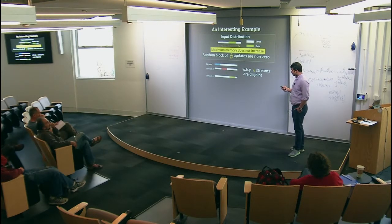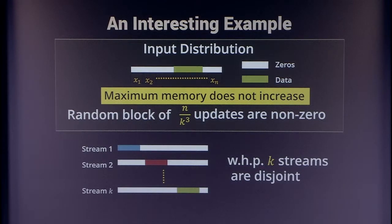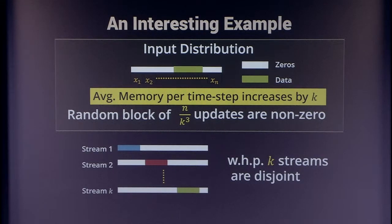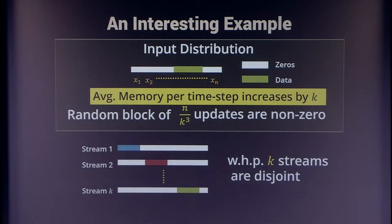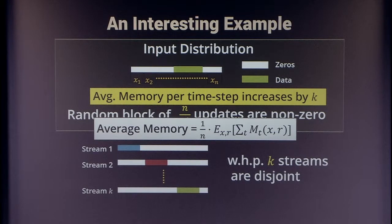But something else is going on in this example. You're still processing k streams, so the average memory per time step required to compute this function still increases by a factor of k, because you're doing k times more processing. This is essentially the question we want to study: whether, with average memory as the complexity measure, the direct sum theorem holds. The average memory is defined as the expectation over inputs and randomness of the total memory for every time step, scaled by the number of time steps.